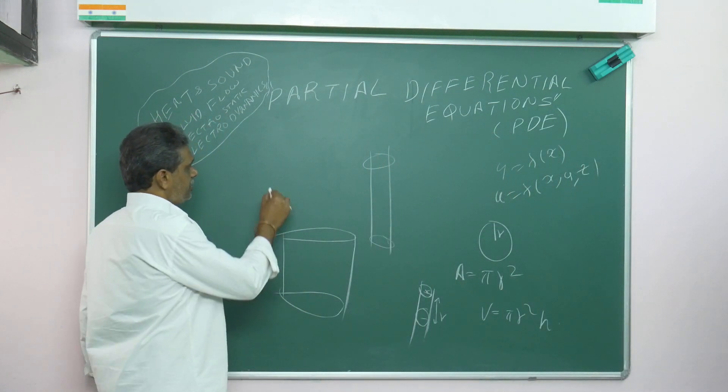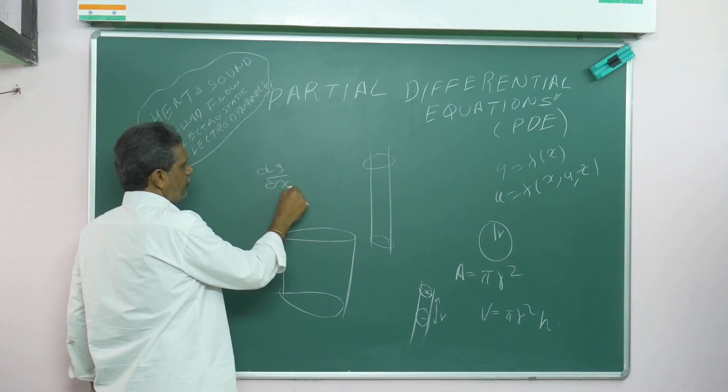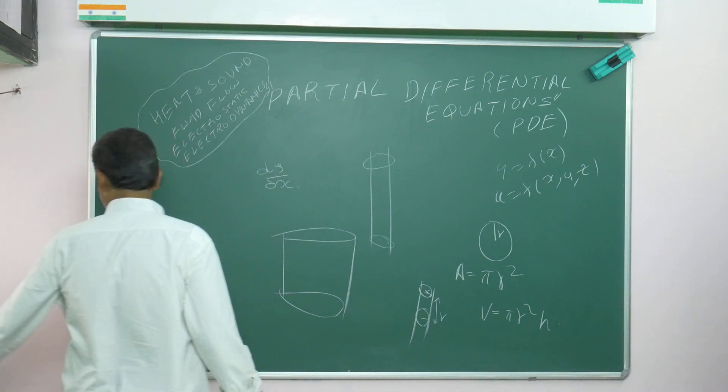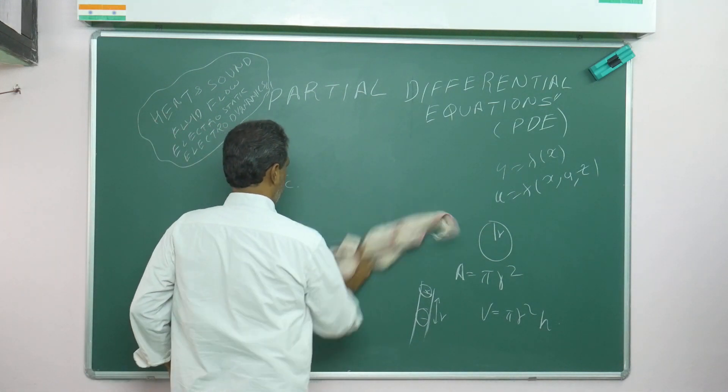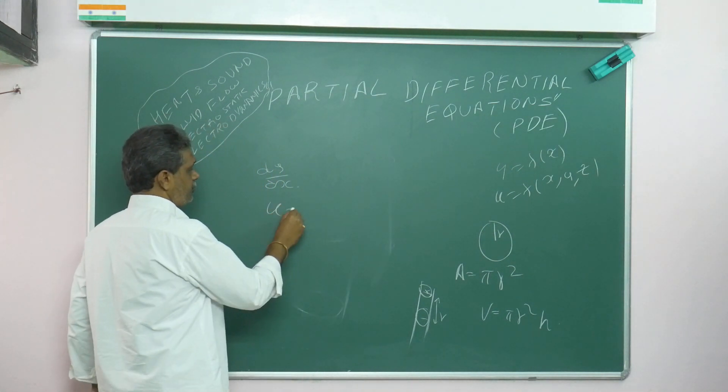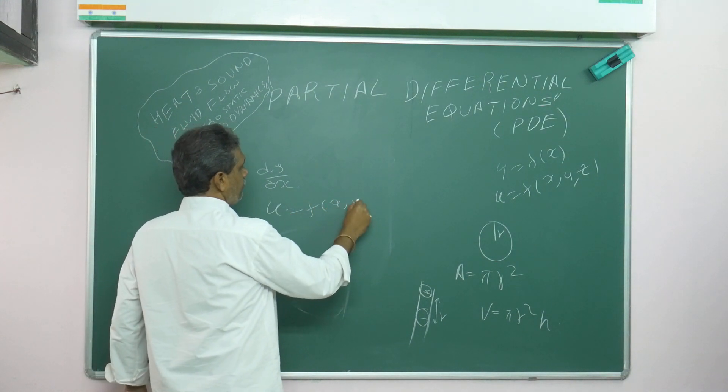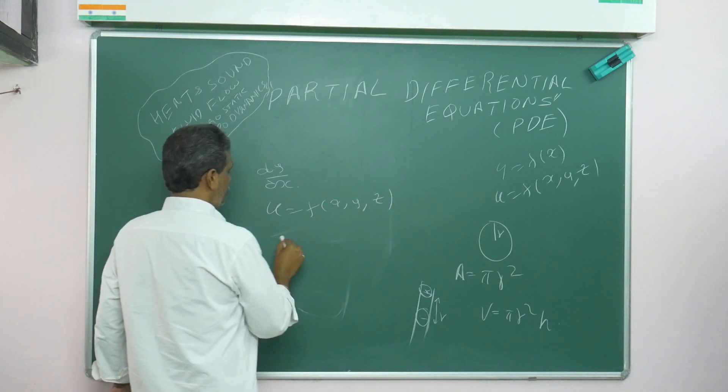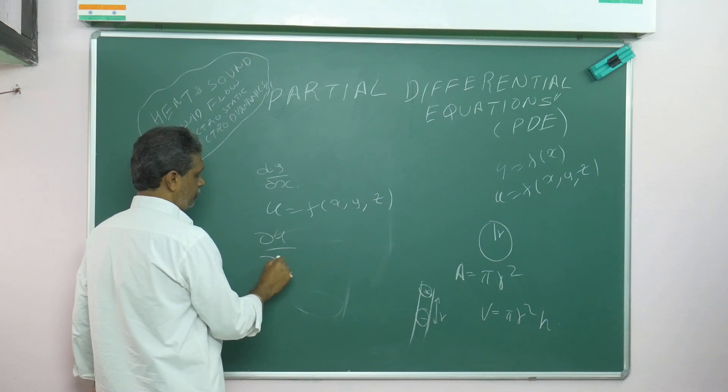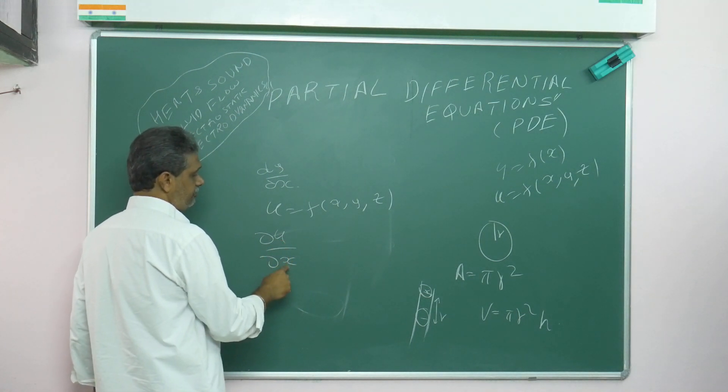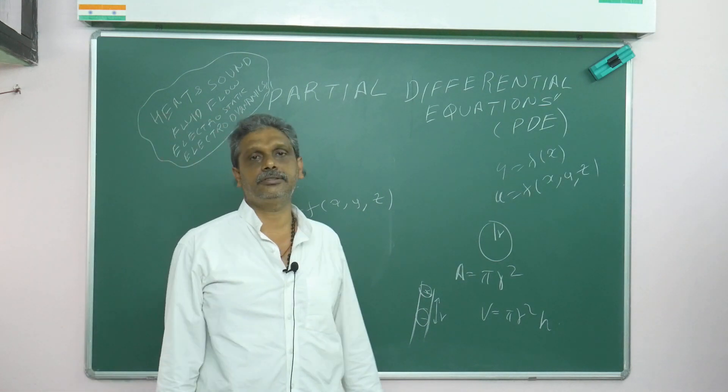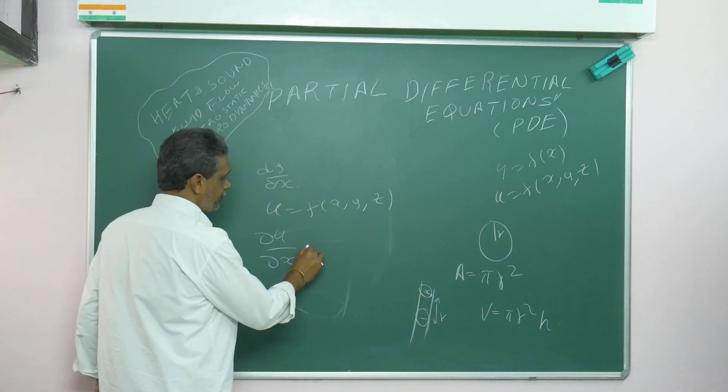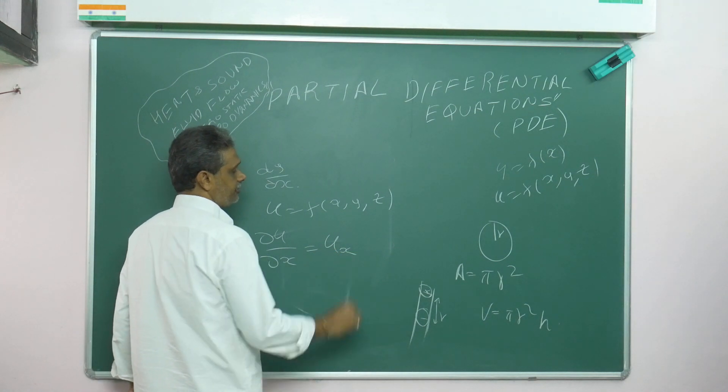How to write: in ordinary differentiation, you write dy/dx. In partial differentiation, suppose u equals f of x, y, z, you may write ∂u/∂x. You differentiate u with respect to x alone, treating the remaining variables as constants. This is the first important point. This may also be denoted as u subscript x.